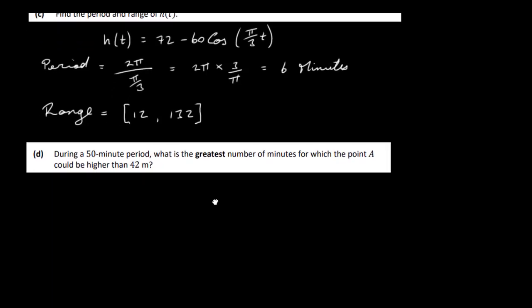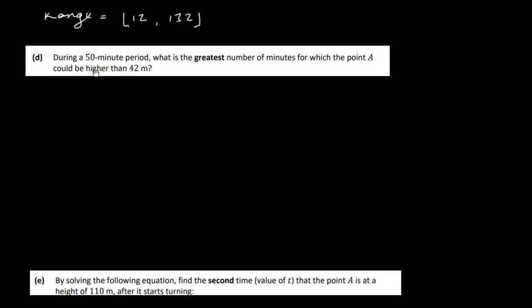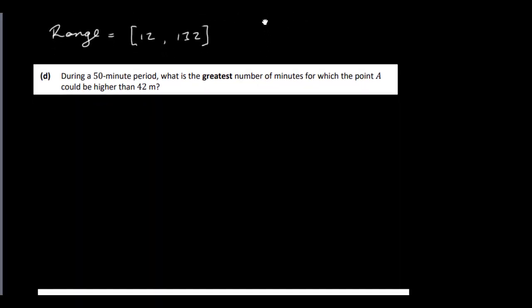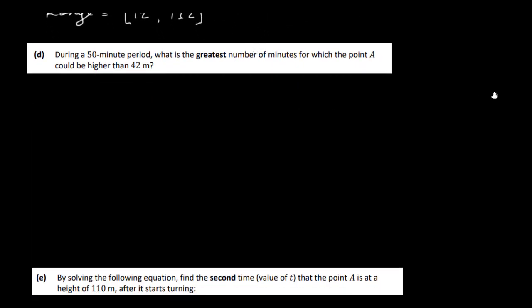The next part asks: during a 50-minute period, what is the greatest number of minutes for which point A could be higher than 42 meters? This takes a bit of thinking. We consider one full period of 6 minutes — starting at t = 0, 1, 2, 3, 4, 5, 6 — and after that we're back to where we started.